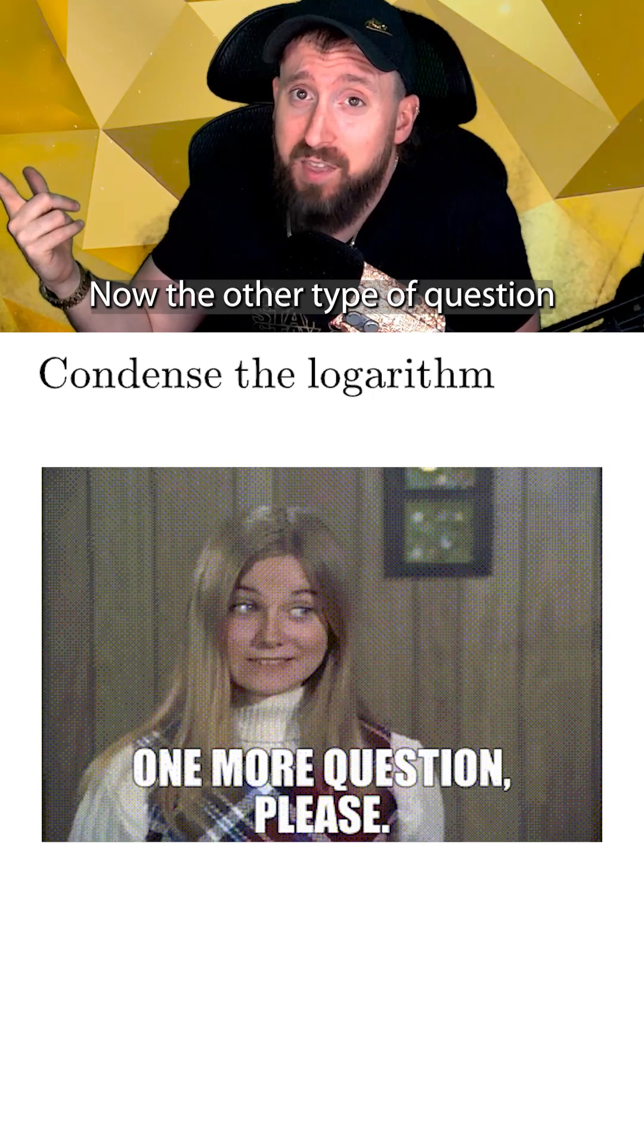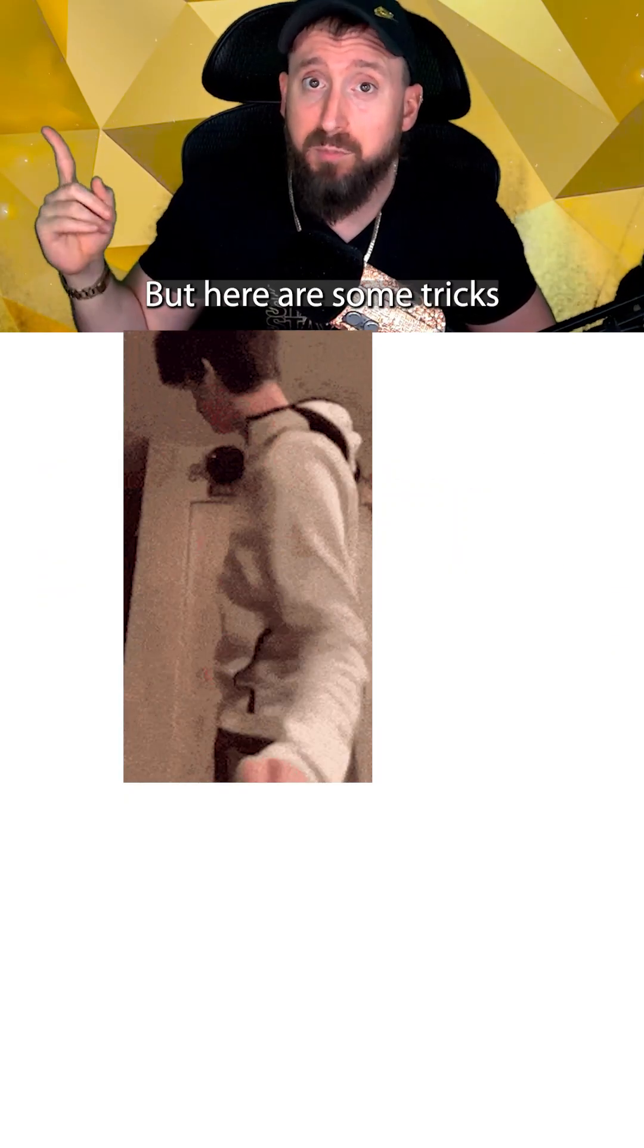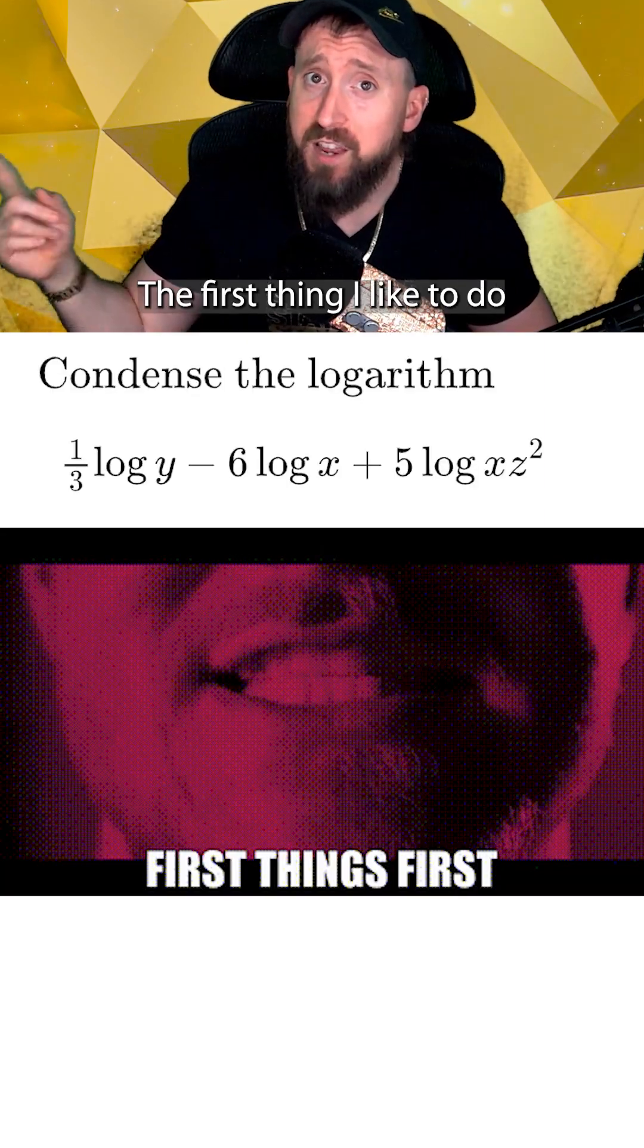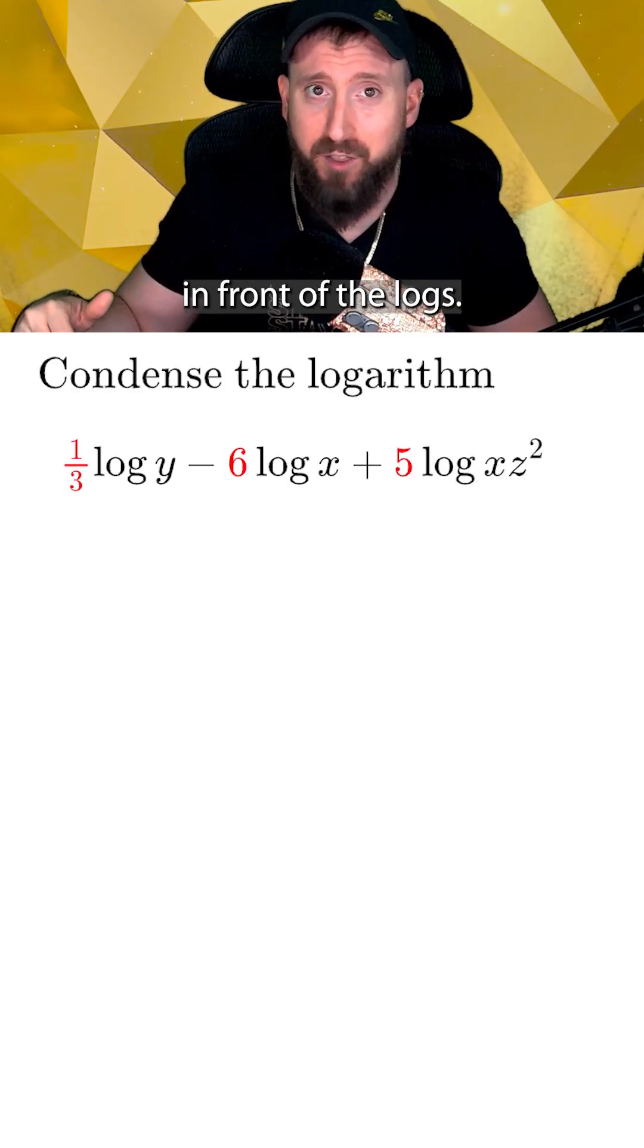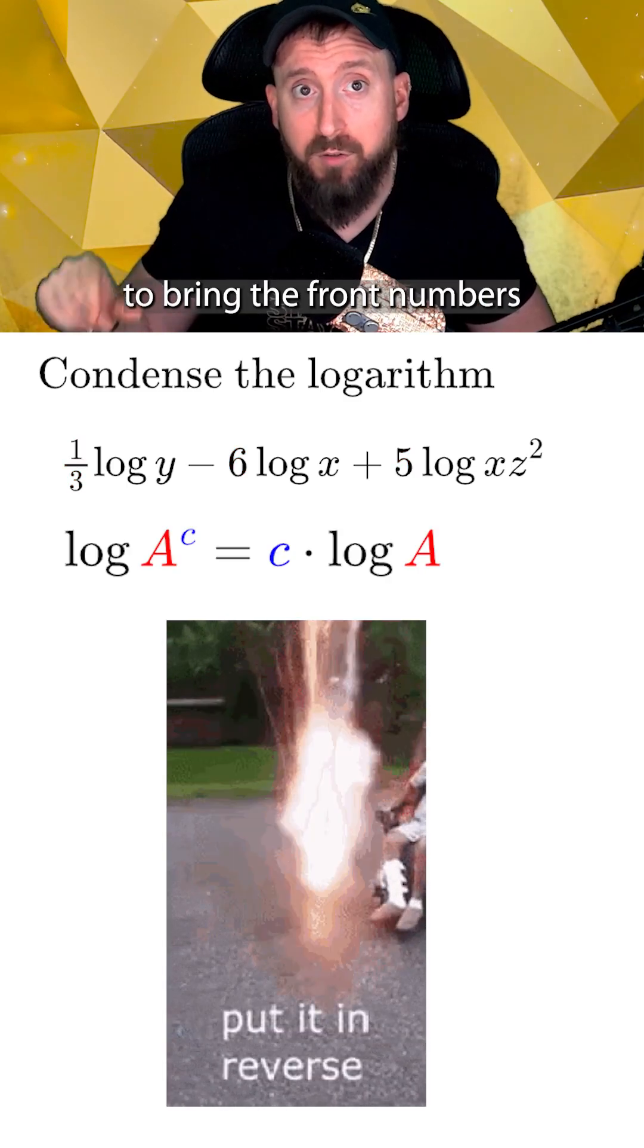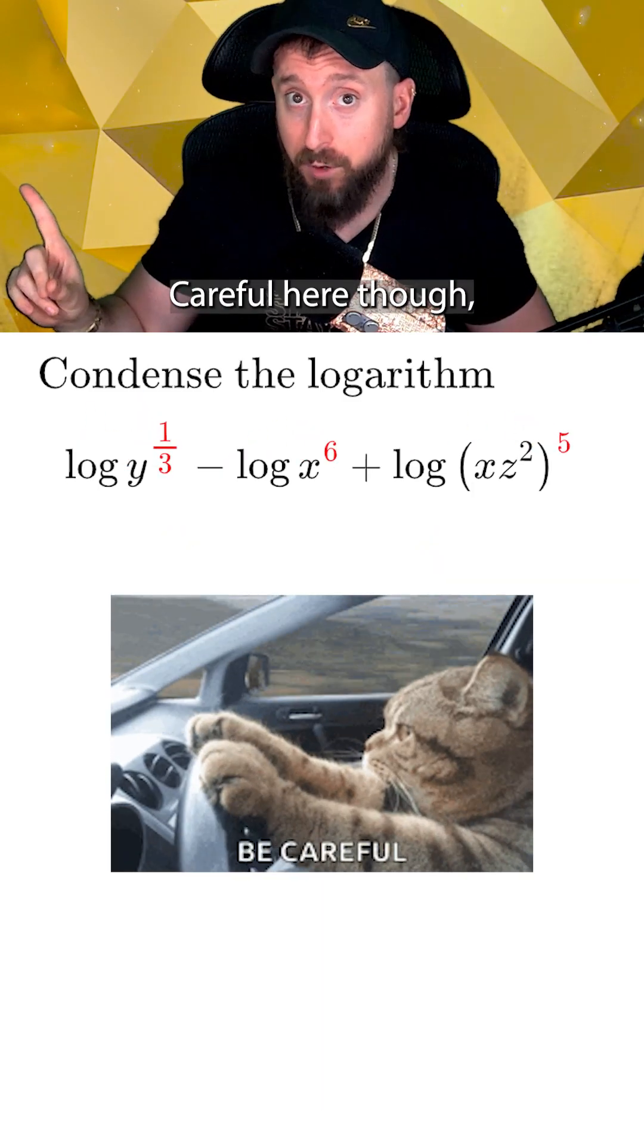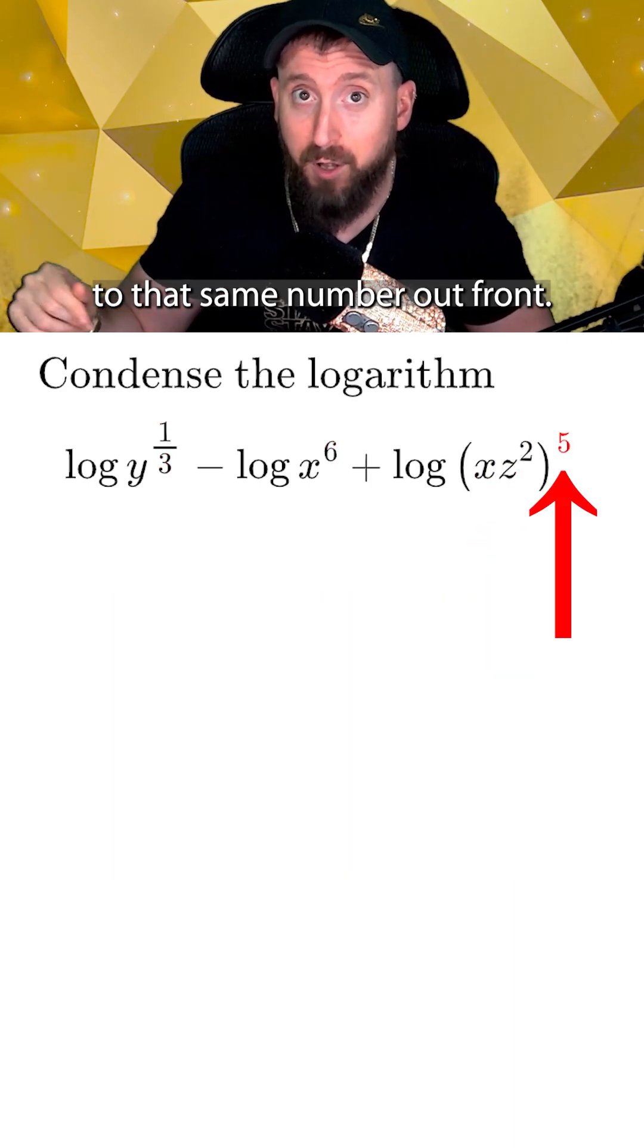Now the other type of question they can ask is for condensing logarithms, which is basically doing things in reverse. But here are some tricks to keep things straight. The first thing I like to do when given these types of problems is get rid of all the numbers in front of the logs. To do this, we just use the power rule to bring the front numbers back up as exponents. Careful here though, because this means everything inside the log needs to be raised to that same number out front.